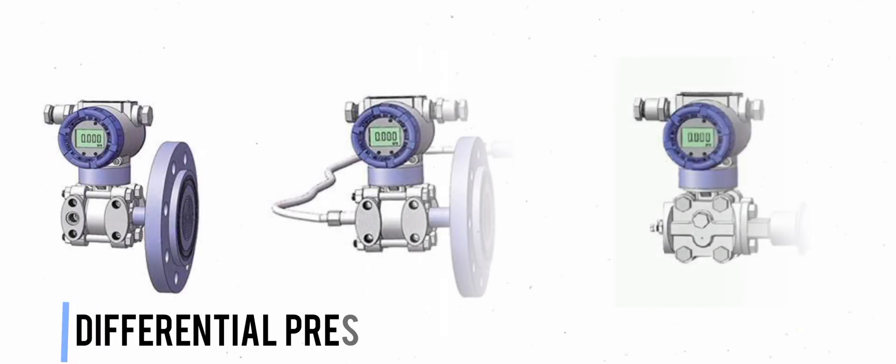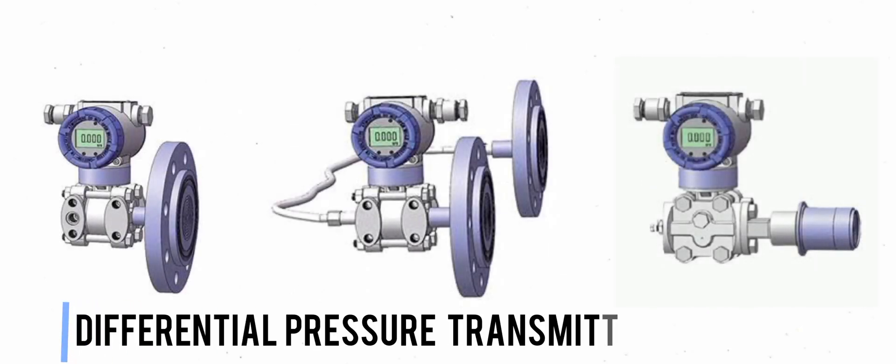In this lesson, we are going to discuss differential pressure transmitters. Simply, a differential pressure transmitter is a device that measures two opposing pressures in a pipe or vessel.